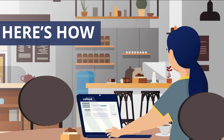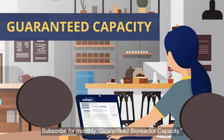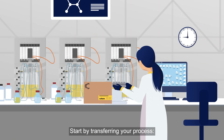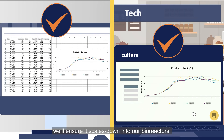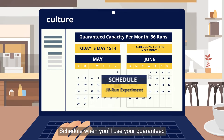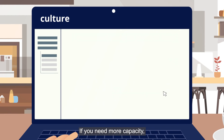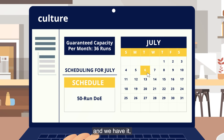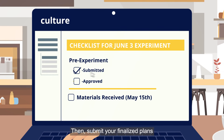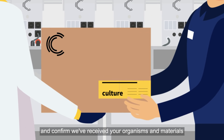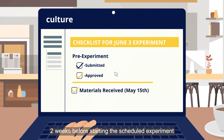Here's how. Subscribe for monthly guaranteed bioreactor capacity. Start by transferring your process — we'll ensure it scales down into our bioreactors. Schedule when you'll use your guaranteed capacity for the next month. If you need more capacity and we have it, it's yours. Then submit your finalized plans and confirm we've received your organisms and materials two weeks before starting the scheduled experiments.